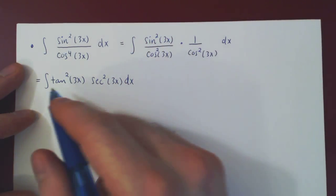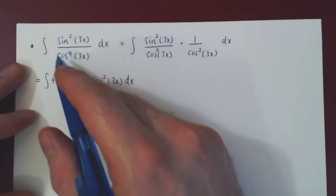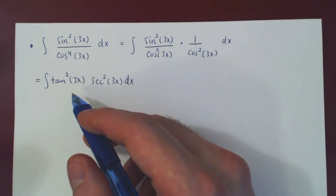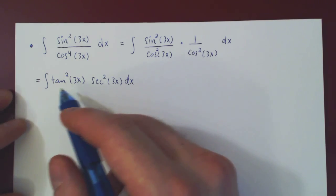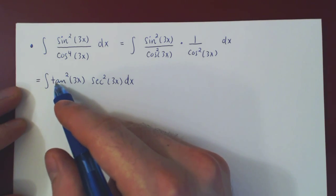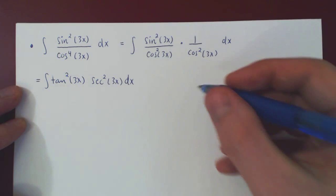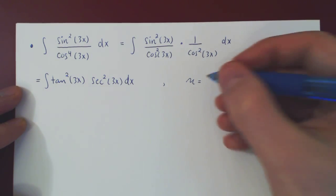And now you may wonder, why is this nicer than the original integral? The answer is that this is a simple u-substitution. The derivative of tangent is secant squared. And now we're basically done.